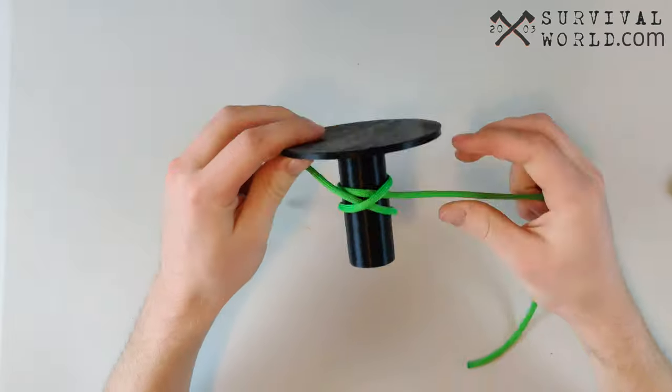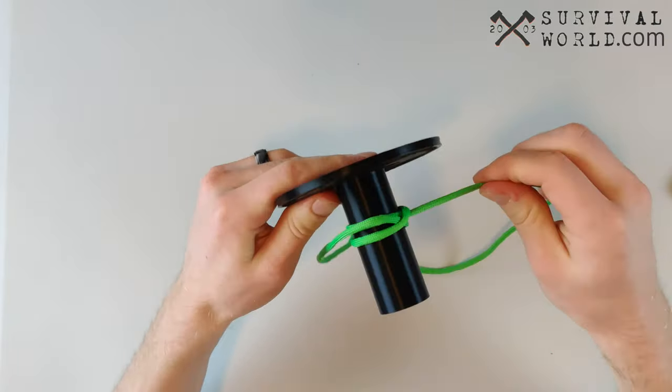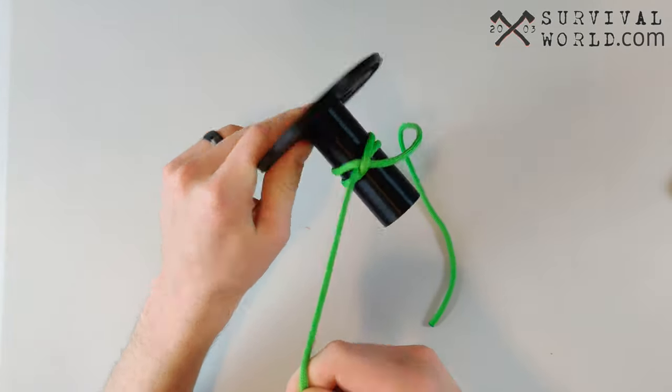The clove hitch is one of the most widely used knots out there, but unlike some of the other knots in this series, it has some more specific uses, advantages, and disadvantages.